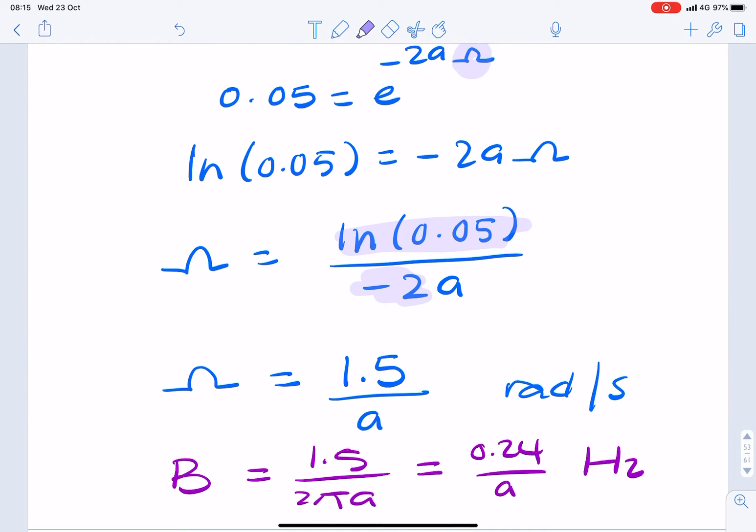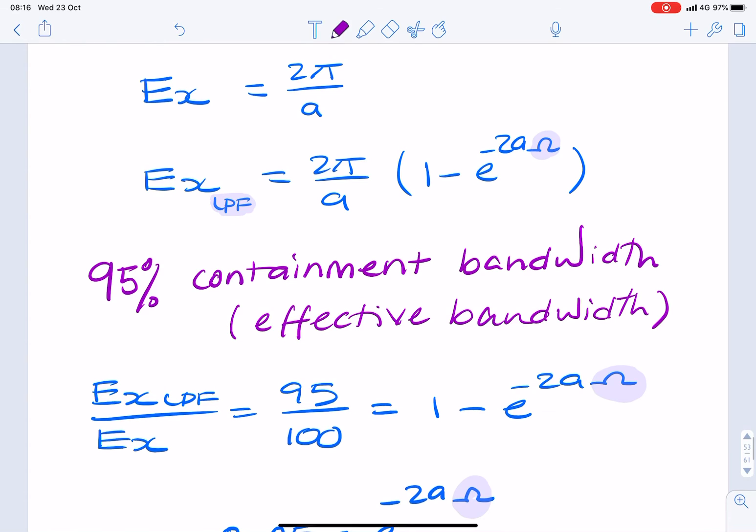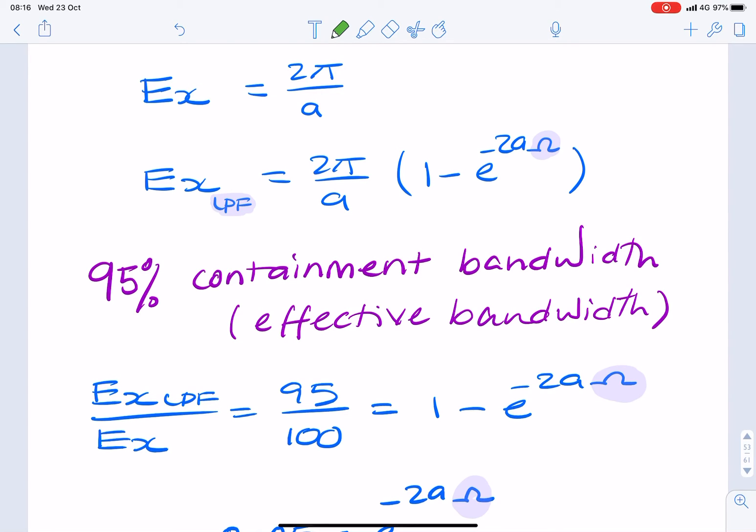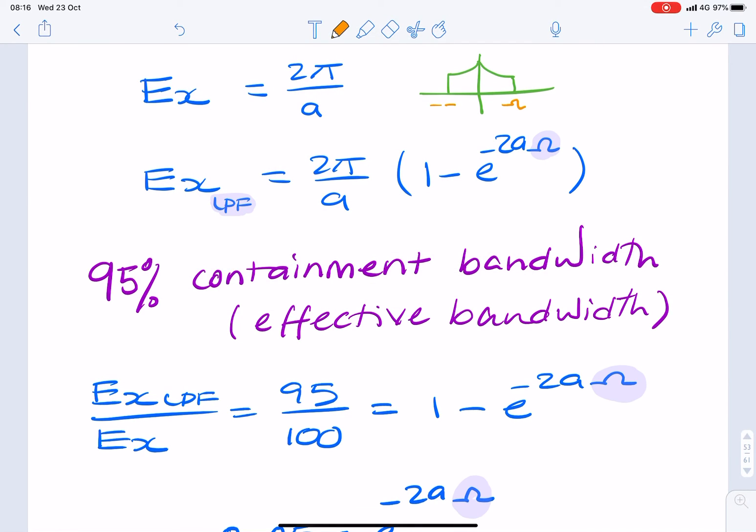So what have we just found? We found the value for the cutoff frequency of the low-pass filter. If we're talking about a filtered signal, we're talking about the value of frequency, omega, for which the signal will retain 95% of its energy. So we call this the effective bandwidth, or the 95% containment bandwidth.